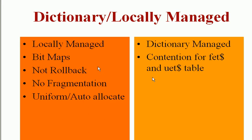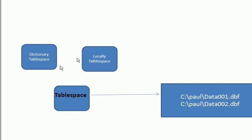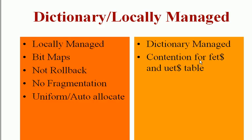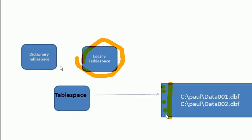Let's understand again the two different important types of tablespaces: Dictionary Managed Tablespace and Locally Managed Tablespace. In a Locally Managed Tablespace, the information regarding free blocks is stored in the data file header as bitmaps. Since it doesn't have to query a separate table to know the free blocks, it improves performance. In Oracle 10G, by default, whatever tablespaces you create are all Locally Managed Tablespaces.